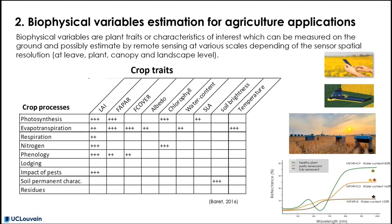Besides the spectral indices directly derived from surface reflectance, the other approach to monitor the crop relies on the estimation of biophysical variables. Unlike spectral indices, biophysical variables are plant traits or plant characteristics which exist by themselves and can be measured on the ground. They can also be measured or estimated by remote sensing at various scales depending on the sensor spatial resolution.